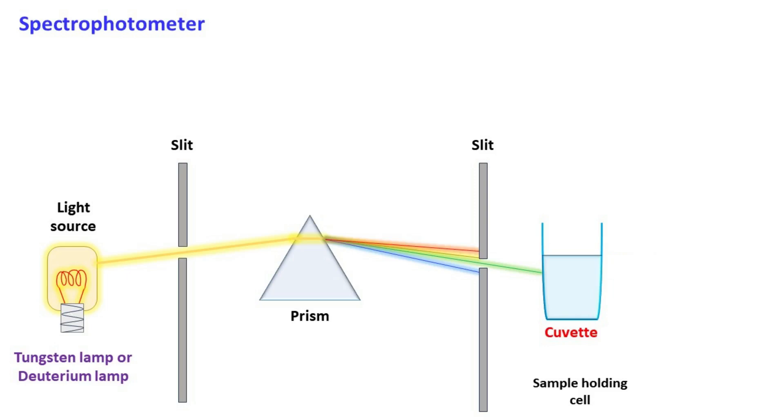The detection of light coming out from the sample is done by a photomultiplier tube or photodiode. If the concentration of sample is more, the absorbance of light will be more. If the concentration of sample is less, the absorbance of light will be less.